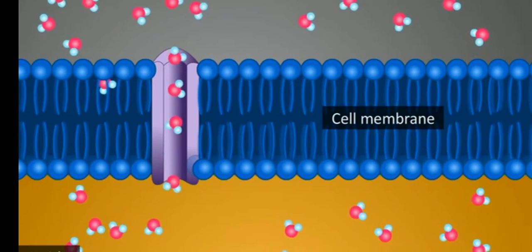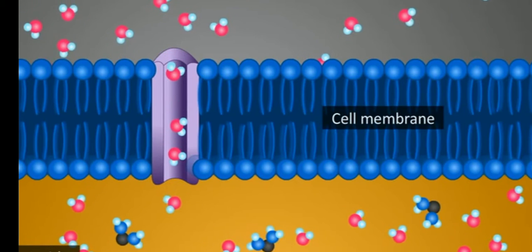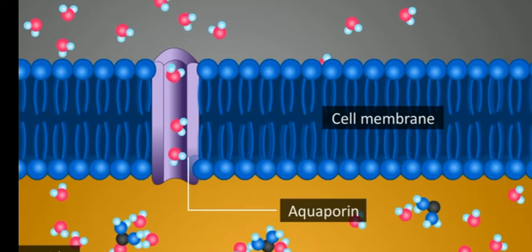By osmosis phenomenon, water molecules tend to flow from outside to inside the cell through pores known as aquaporin across the cell membrane.